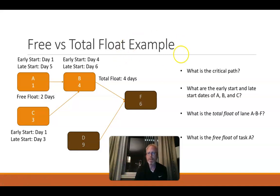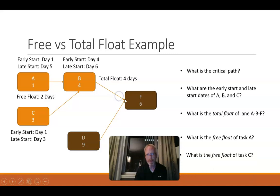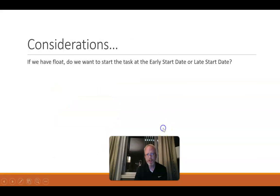So the free float of task A is two days. We can think of it like a mini critical path of just this subset: C to B would be the critical path if we ignore D to F. Free float is effectively the float on the parallel path, which is two days. And the free float of C is zero — C cannot be delayed at all without impacting the early start date of B. That is essentially free float.